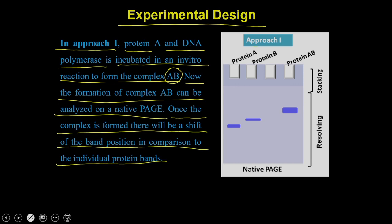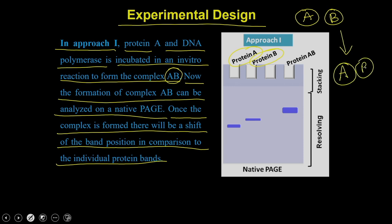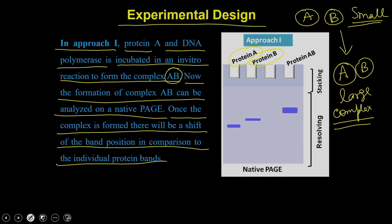You take protein A, you take the DNA polymerase, and load it onto a native PAGE. If these 2 are interacting, protein A and protein B will actually form the complex A-B. Individually they are small, but when they come together they are going to form a large complex, which means the molecular weight of the individual proteins is going to be small whereas the molecular weight of the A-B complex is going to be on a higher side.